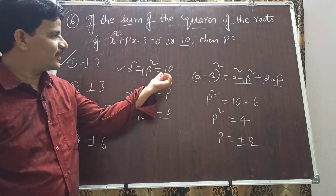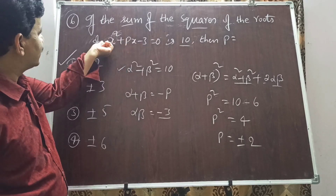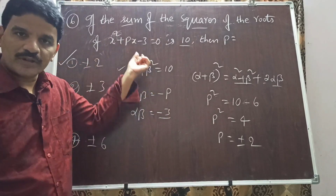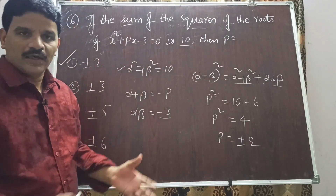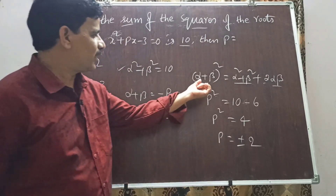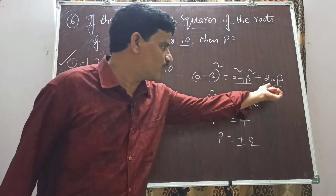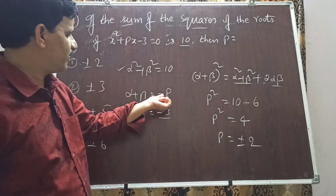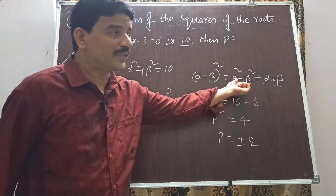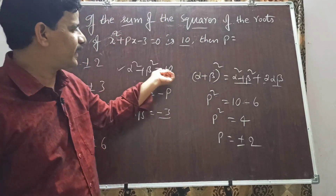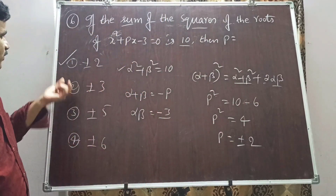To summarize: sum of roots = -b/a = -p, product of roots = c/a = -3. Apply the identity (alpha + beta)² = alpha² + beta² + 2·alpha·beta: p² = 10 + 2(-3) = 10 - 6 = 4, so p = ±2 is the right answer.